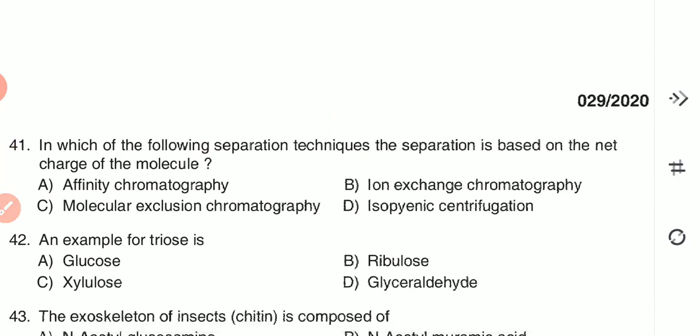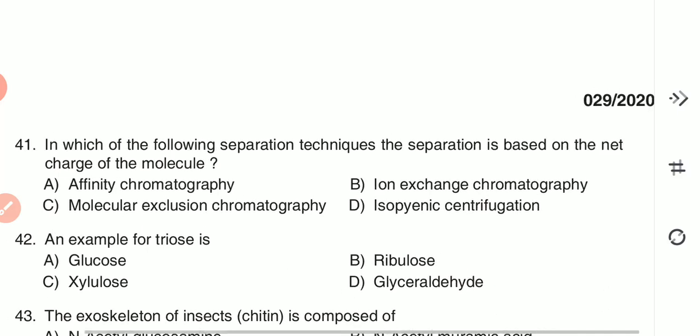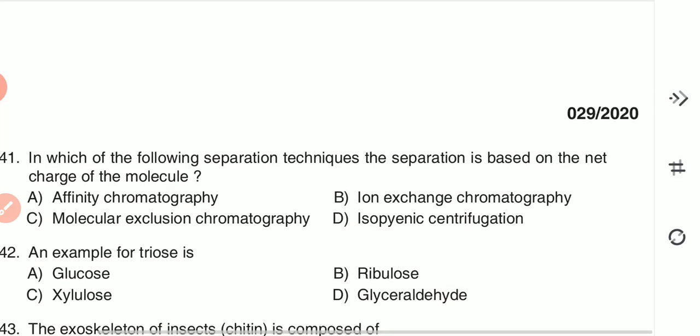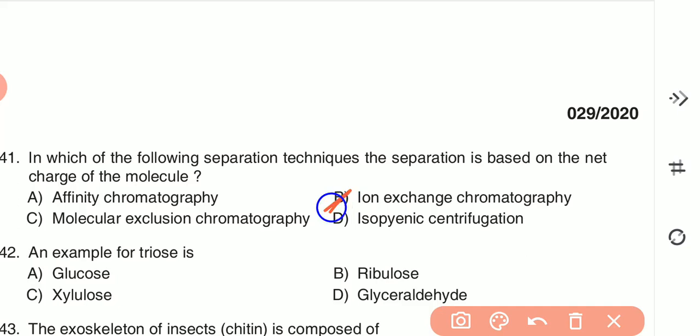Question 41: In which of the following separation techniques is separation based on the net charge of the molecule? (A) affinity chromatography, (B) ion exchange chromatography, (C) molecular exclusion chromatography, or (D) isopycnic centrifugation. Ion exchange chromatography is the correct answer — option B.